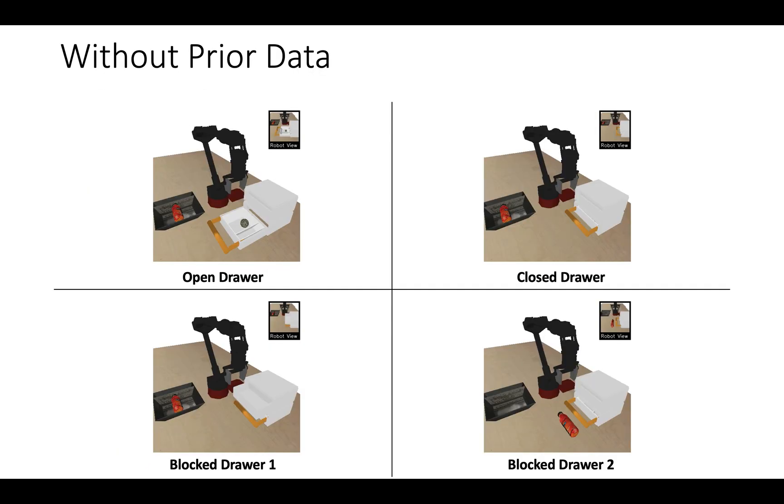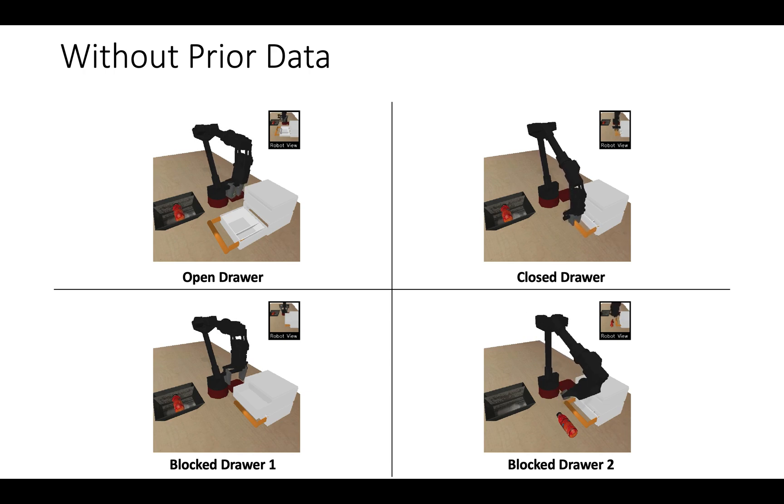Let us first visualize the policies learned without any prior data. We see that the policy is able to successfully execute the task from initial conditions that were seen in the training set, but fails to solve the task for unseen initial conditions.